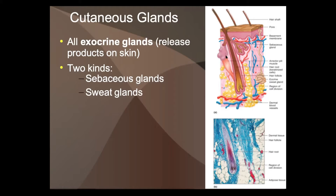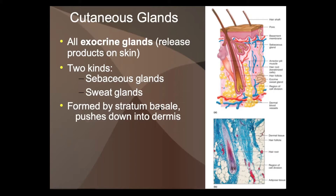Oil glands are by the hair. Sweat glands are just pores that come out in different places in the skin. These glands are formed by the bottom layer of the epidermis, the stratum basale, and they move down through the dermis — created in that dark purple layer and then pushed down further into the dermis as they grow.